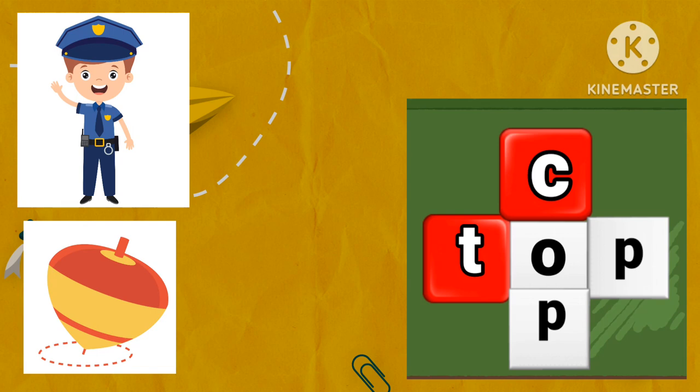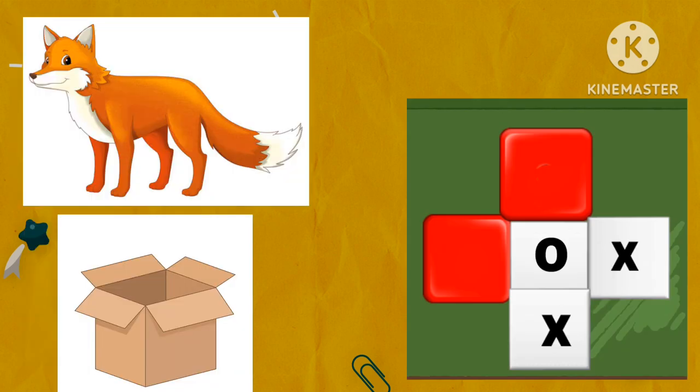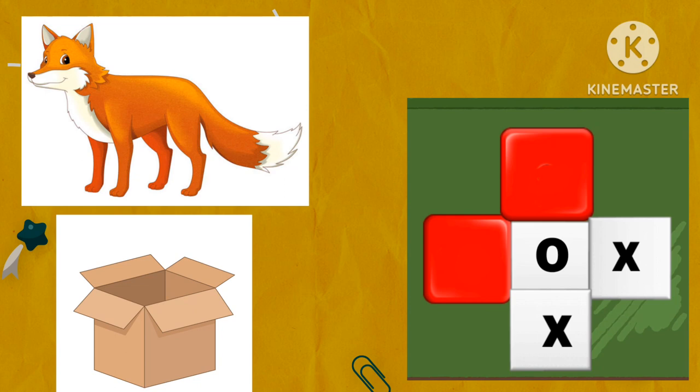Well done. Next, look at the pictures and guess the rhyming words. Fox, box. Which letters are missing? Letter F and letter B. Drop the missing letters in the red boxes. Letter F for fox and letter B for box.